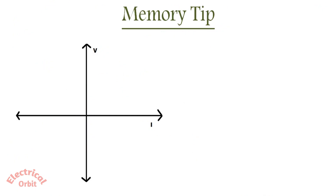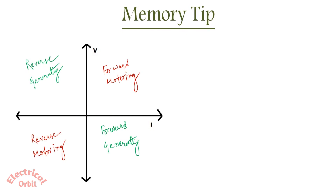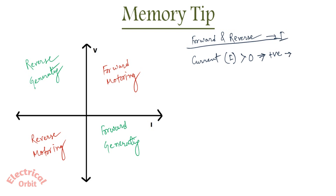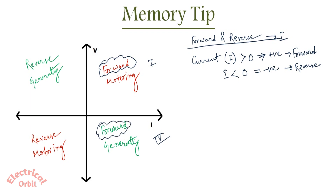Here I have explained all the converter operations and the significance of each quadrant. Now let me give you a memory tip regarding the confusion about which quadrant is motoring and which is generating, as well as what is reverse and what is forward. To determine forward or reverse, just consider the current: if your current is positive then it is a forward operation, and if your current is negative then it is a reverse operation. In quadrant 1 and 4 the current is positive so this is forward operation; in quadrant 2 and 3 the current is negative so it is reverse operation.